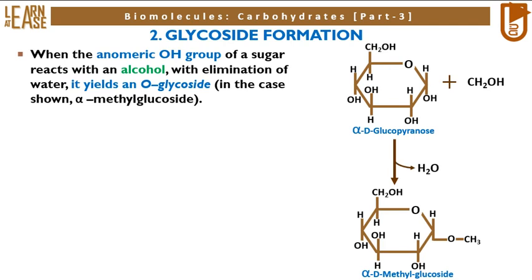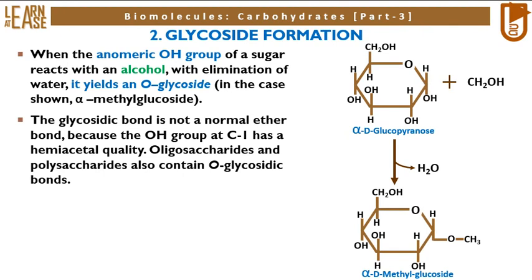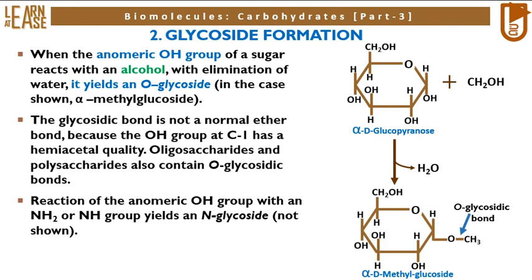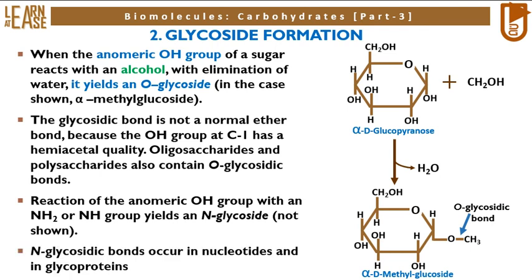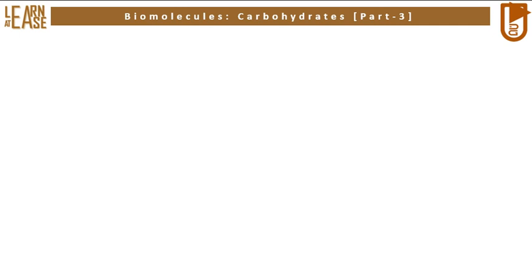The glycosidic bond is not a normal ether bond because the OH group at C1 has a hemiacetal quality. Oligosaccharides and polysaccharides also contain O-glycosidic bonds. Reaction of the anomeric OH group with an NH2 or NH group yields an N-glycoside. N-glycosidic bonds occur in nucleotides and in glycoproteins.